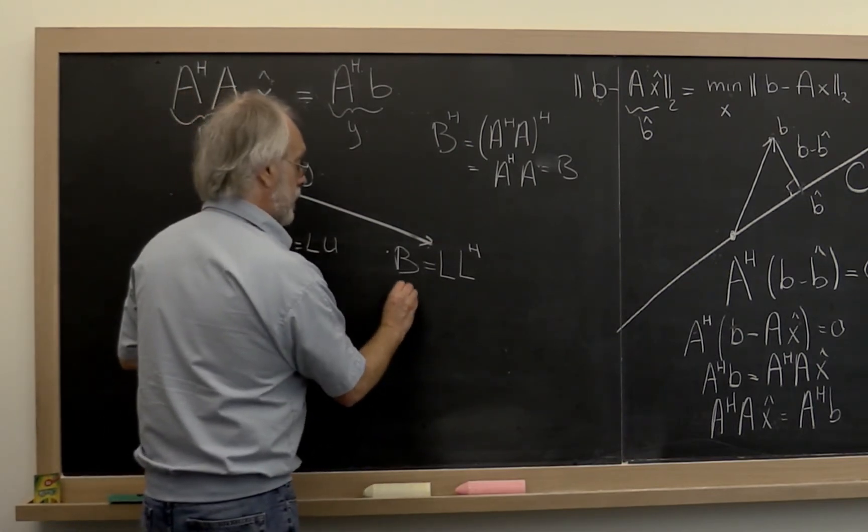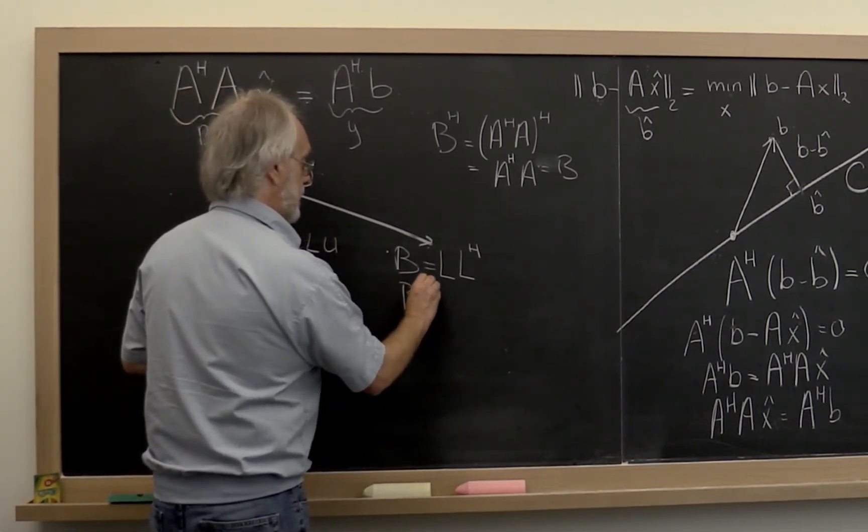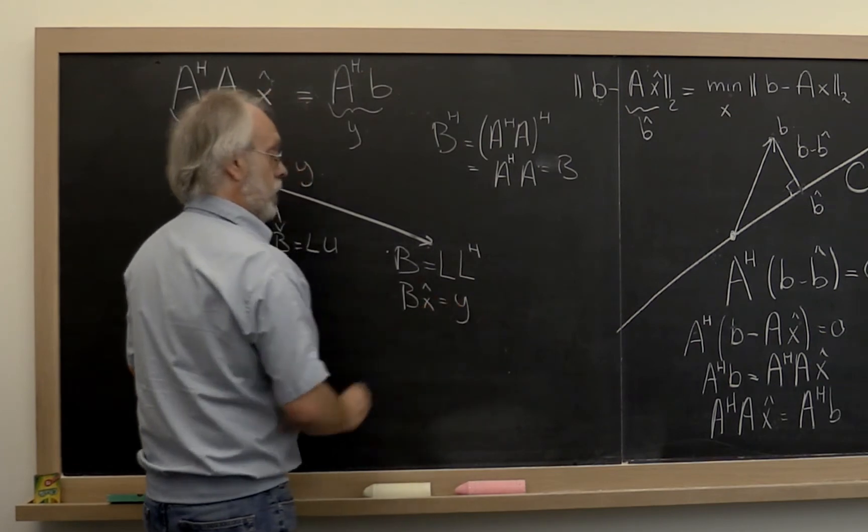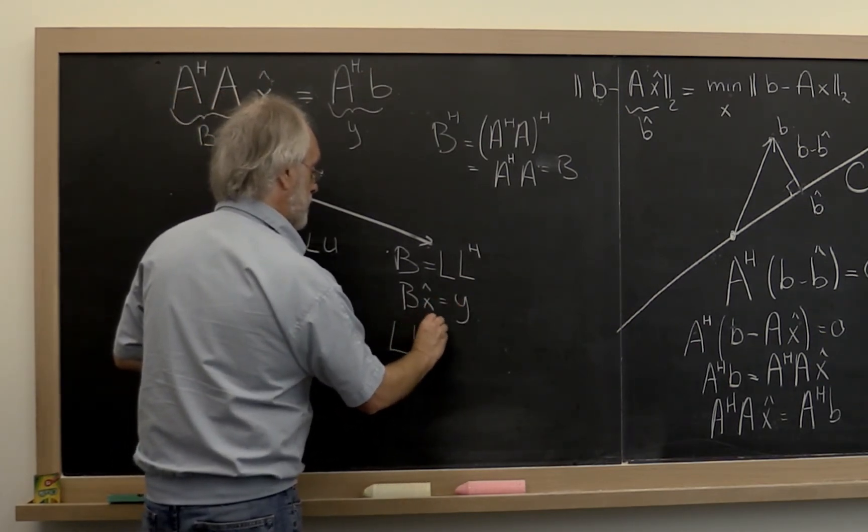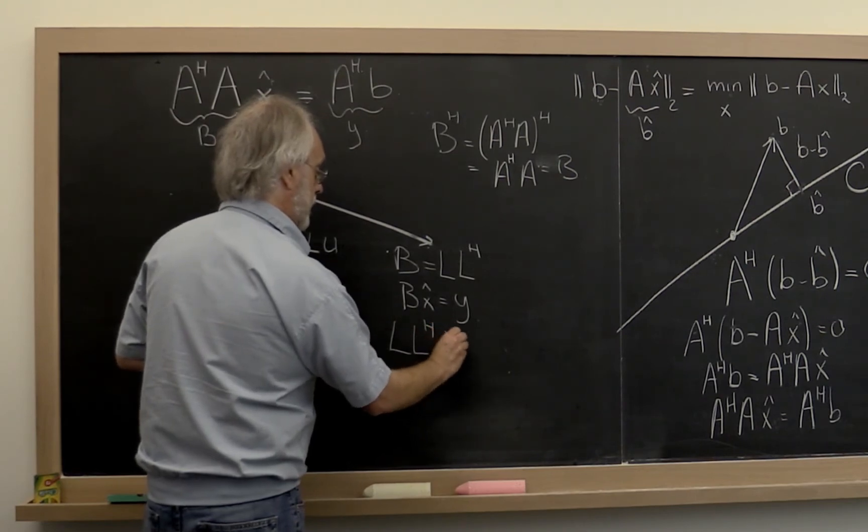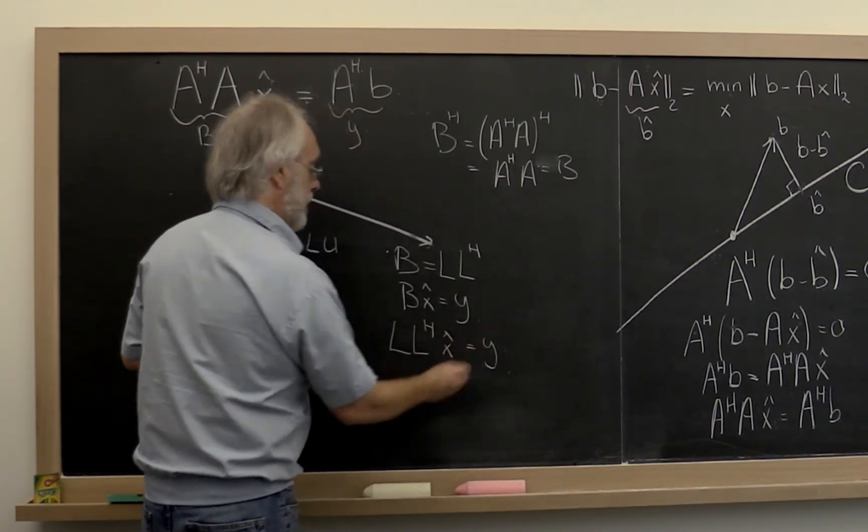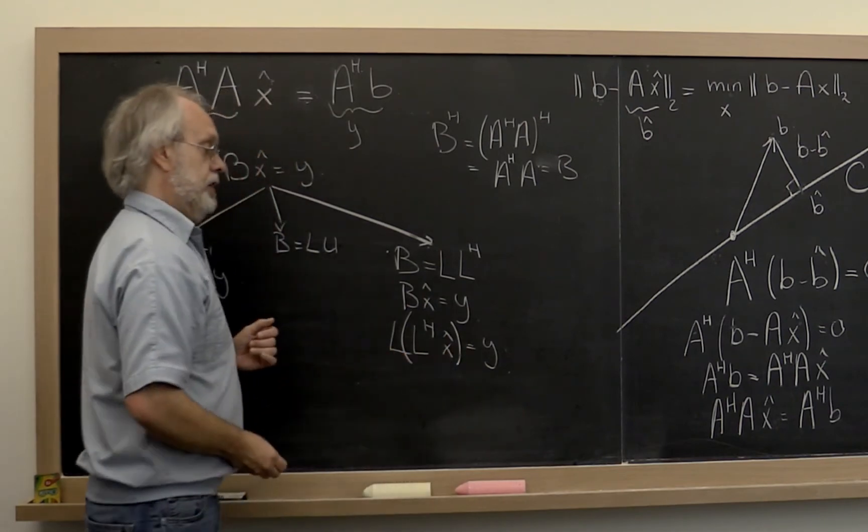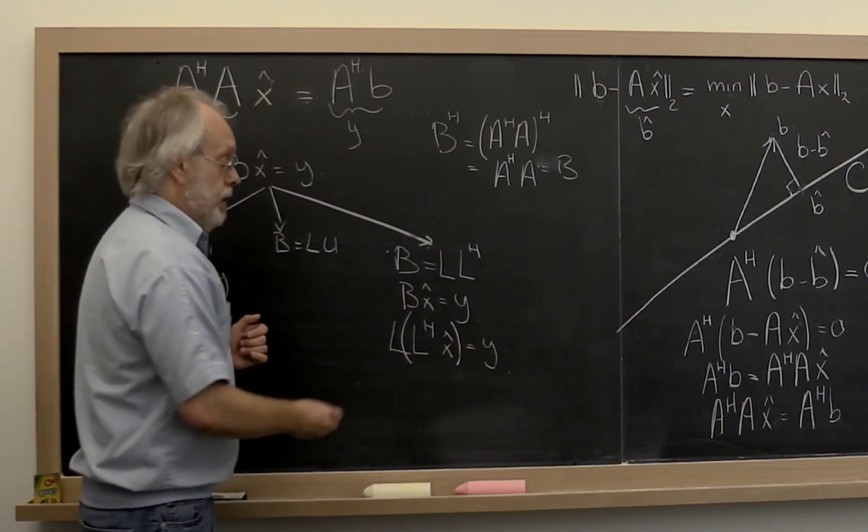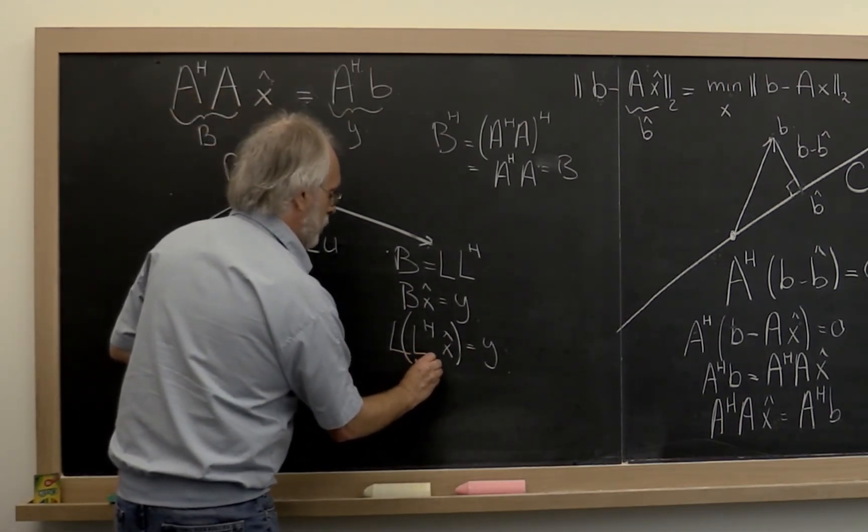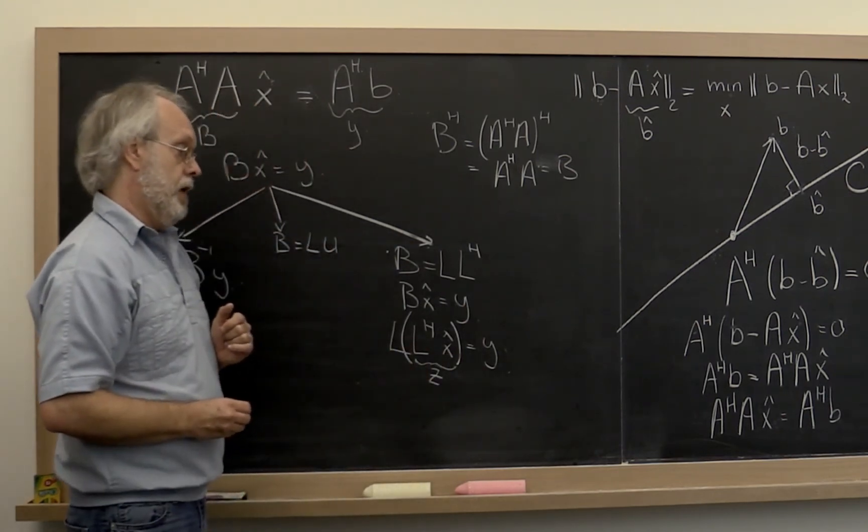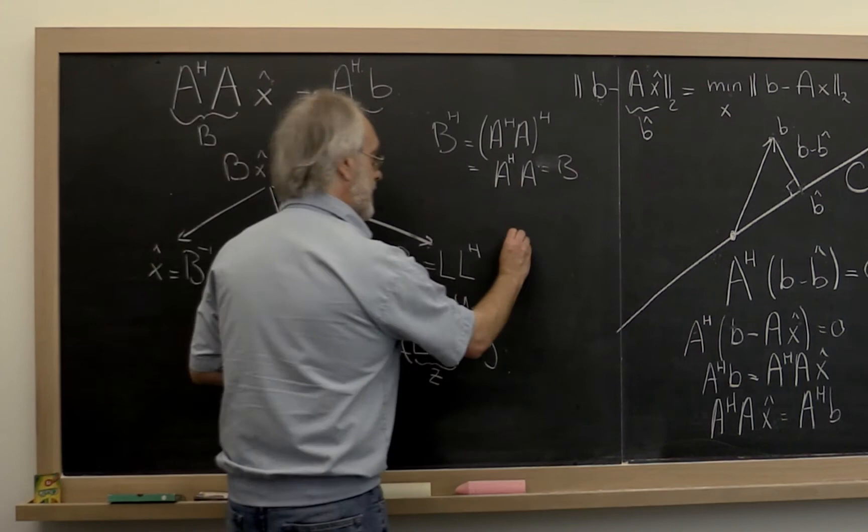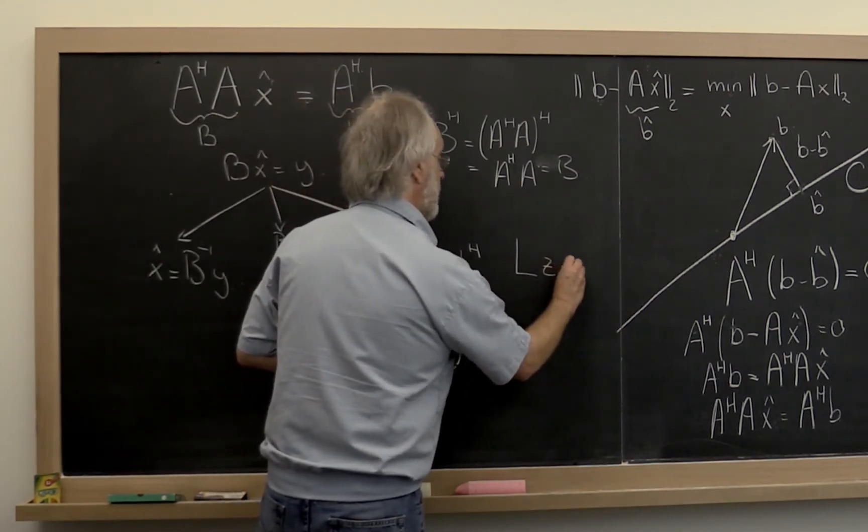We want to solve B times X hat is equal to Y. We can then substitute in for B L times L Hermitian transpose. And then we can place some convenient parentheses. If we then say we don't know what this vector is, but we can call it Z. Then what you notice is that L times Z is equal to Y.